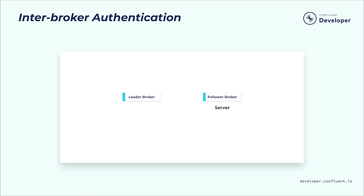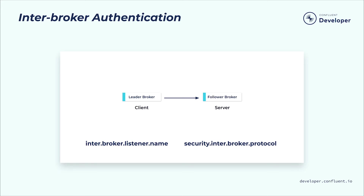Everything we've said here about client-broker authentication using the SSL security protocol applies equally to interbroker communications secured with SSL. In these situations, the broker initiating the connection acts as the client in the client-broker relationship. Use the interbroker listener name or security interbroker protocol setting to configure listeners for broker communication.